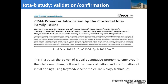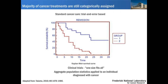This illustrates the power of global quantitative proteomics employed in the discovery phase, followed by cross-validation using specific molecular biology techniques. That was an intro into biomarker and drug target discovery. Now I would like to say a couple of words about why we need biomarkers. The only biomarker until now in most studies is the Kaplan-Meier survival curve, which shows whether treating animals or humans with a drug results in longer survival — it tells us only that a drug is effective, but not the nature of that effectiveness.